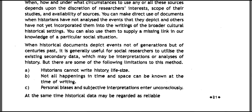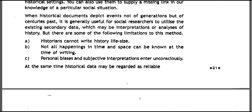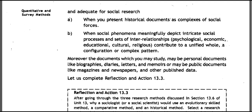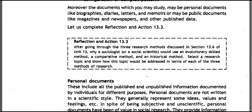There are some limitations to the historical method: (a) historians cannot write history life-size; (b) not all happenings in time and space can be known at the time of writing; (c) personal bias and subjective interpretations enter unconsciously. At the same time, historical data may be regarded as reliable and adequate for social research: (a) when you present historical documents as complexes of social forces; (b) when the social phenomena meaningfully depict intricate social processes, and sets of interrelationships — psychological, economic, educational, cultural, and religious — contribute to a unified whole, a configuration or complex pattern.